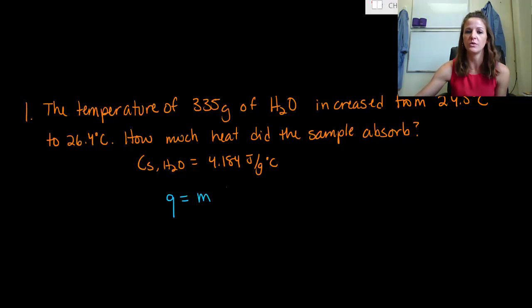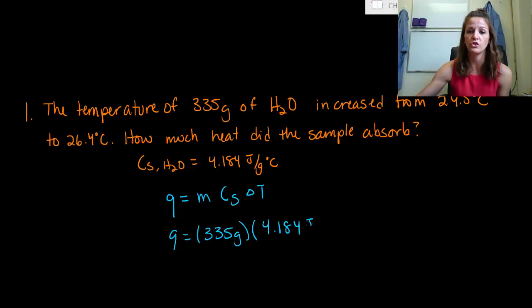You have Q is equal to M times C sub S times delta T. So remember your C sub S is your specific heat that is very unique to whatever molecule it is that you're studying. So heat is what we're looking for. Mass is just the mass of our water, 335 grams of water times the specific heat which was given to us, 4.184 joules per gram degrees Celsius. And then you have your change in temperature, which is final minus initial.